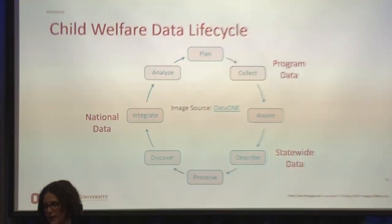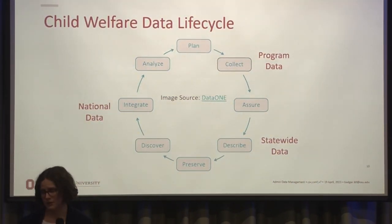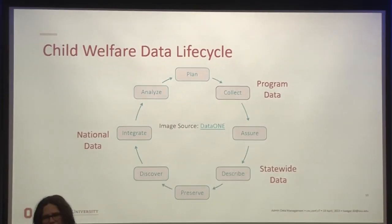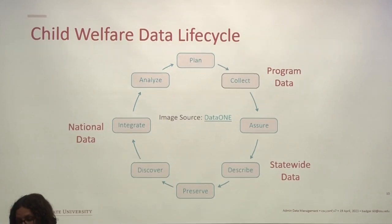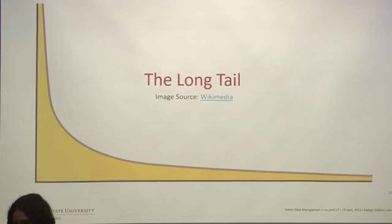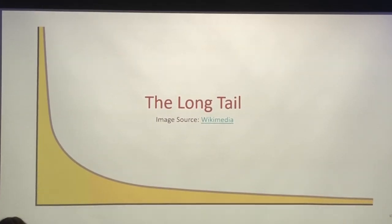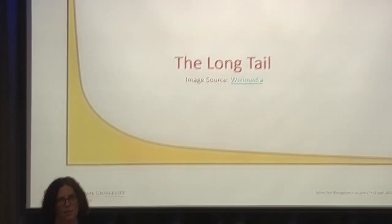Overlooking that program data ultimately means that efforts to improve child welfare data quality don't start at the beginning of the life cycle. I've placed the different types of child welfare data on a research data lifecycle diagram, and the program data is really where the information is collected. There is a long tail of data management need in child welfare. Taken on their own, program offices may collect small amounts of data, but cumulatively, the effects of not building data management capacity within all of those program offices affects the quality of both state and national data. In other words, poor quality data collection processes cannot be corrected after the fact.